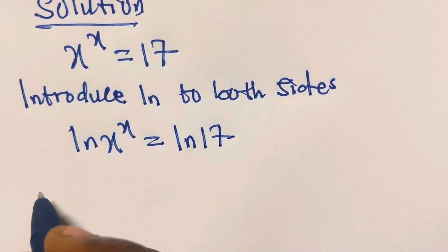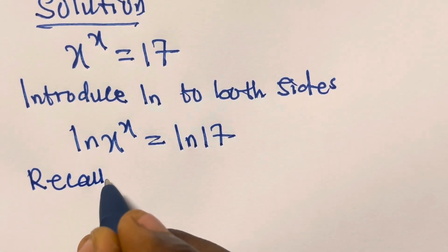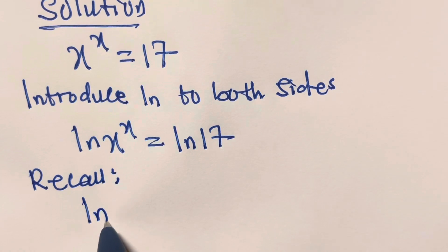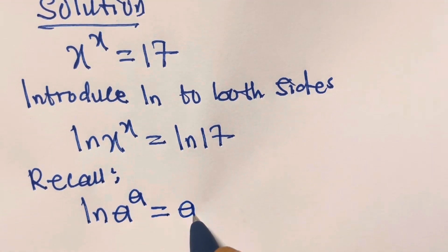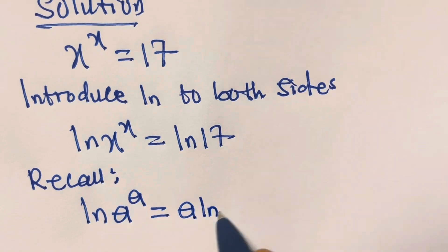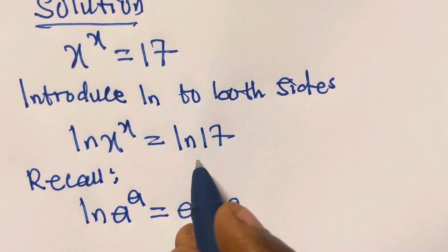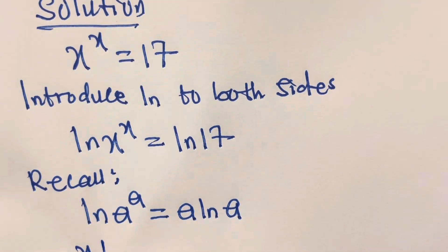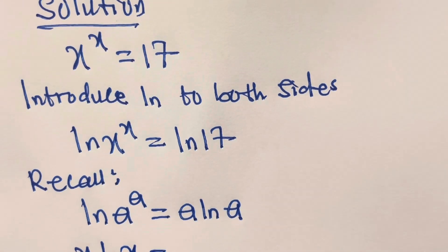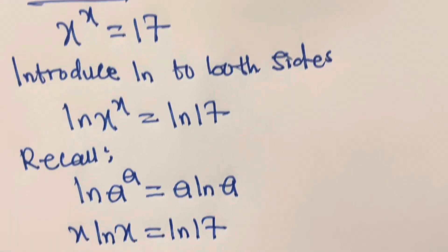Recall from the law of logarithms that when we have ln of a raised to the power a, this equals a times ln a. So applying this, x comes forward and we have x times ln x equals ln 17.